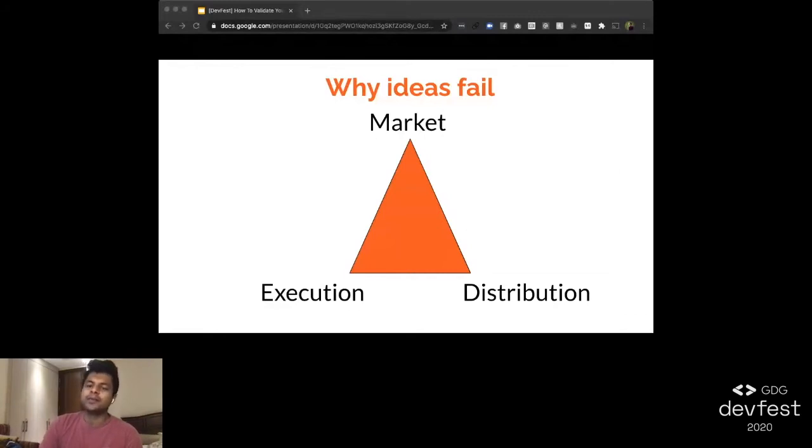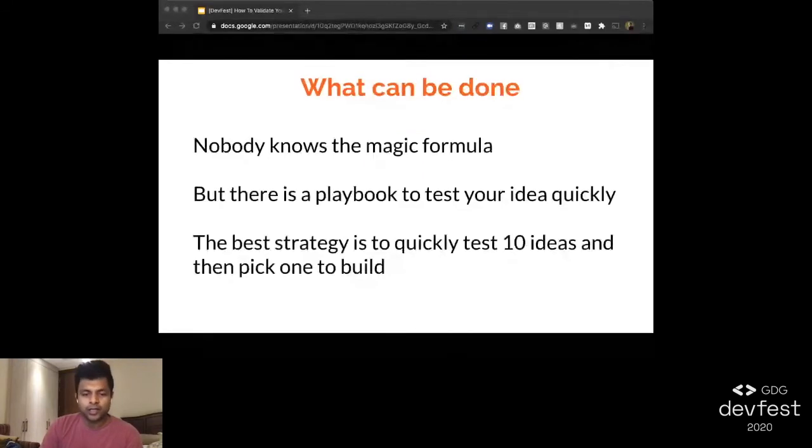So what can be done about this? Unfortunately, there's no magic bullet to predict if the market will be interested in an idea or not. But this doesn't mean that you shouldn't even try building something new. It means that you should try to de-risk your project before spending a lot of time and money building this. In this presentation, I'll talk about exactly that. How do you de-risk your project? I'll talk about a playbook to do that. Basically, this playbook will allow you to not write a lot of code, not spend many months, but try to validate your idea with actual data in a matter of a few days or maybe maximum a week.